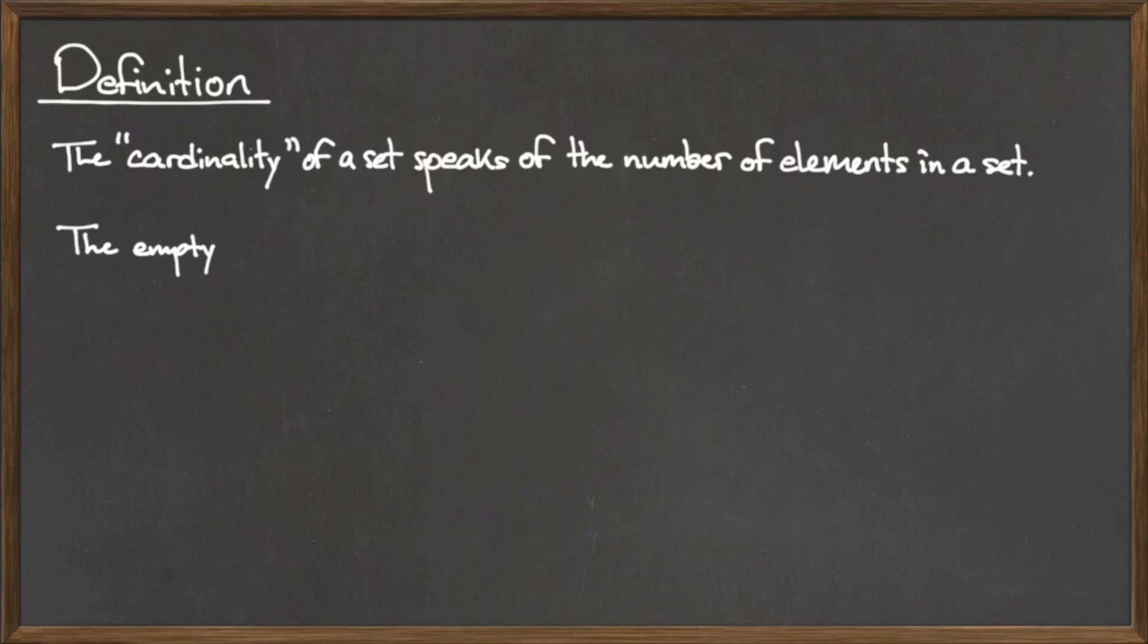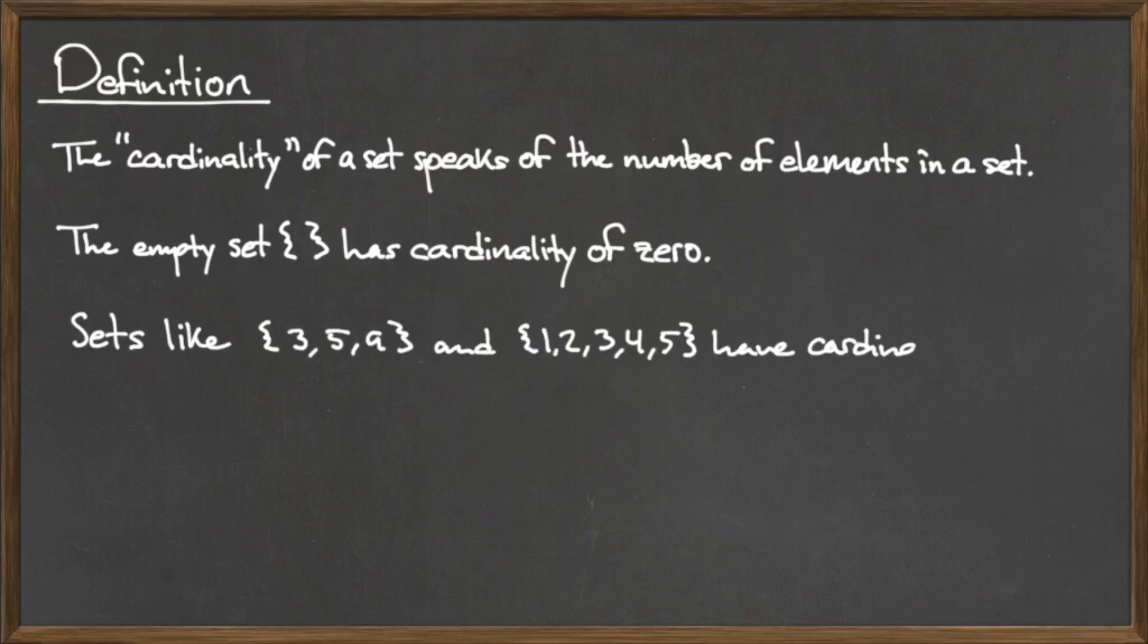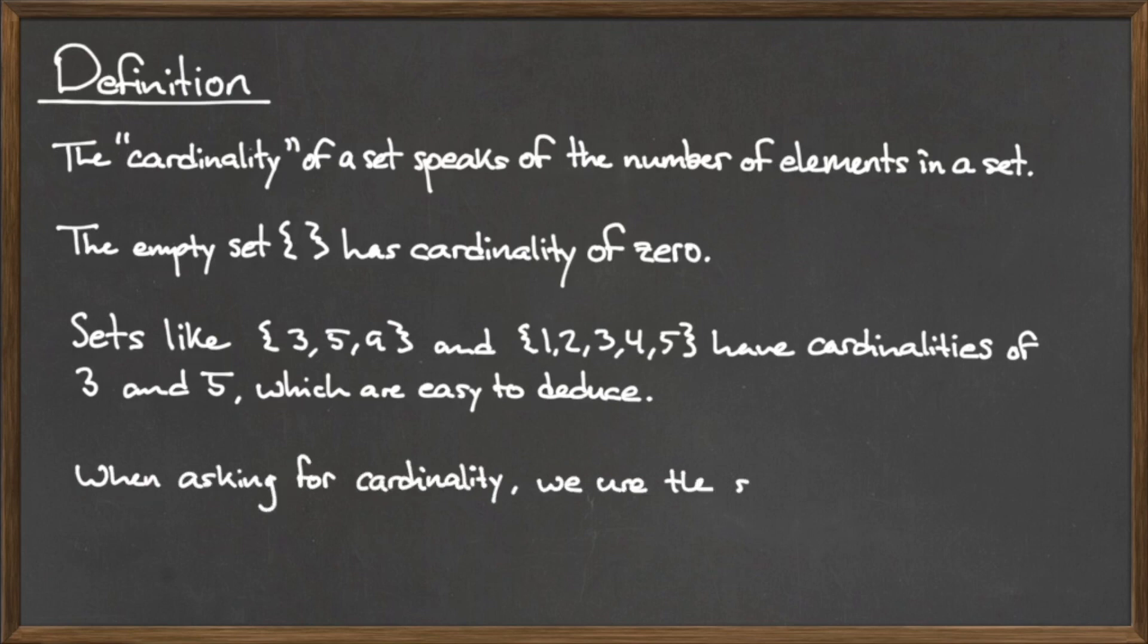Note that the empty set, which contains zero elements, has cardinality zero. For small sets, we can usually just count the number of elements by hand. The set containing the elements 3, 5, and 9 has cardinality 3, since there are 3 elements.